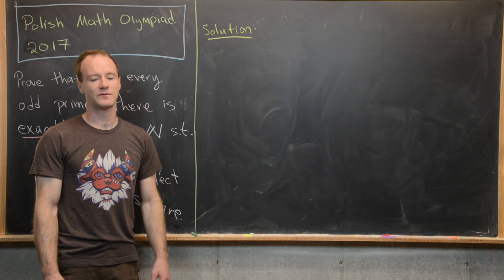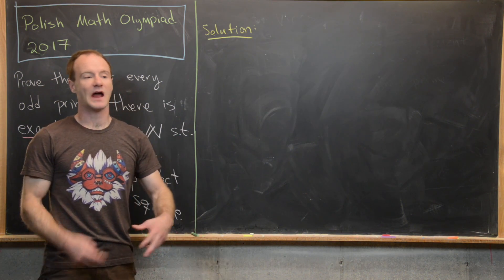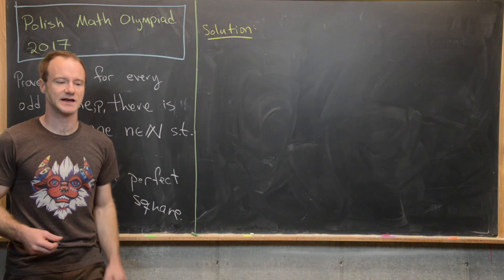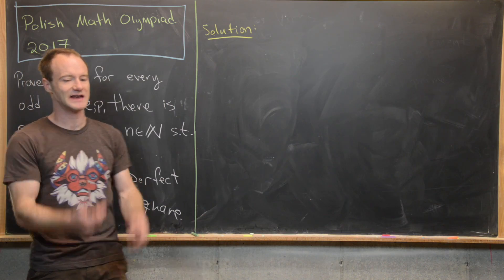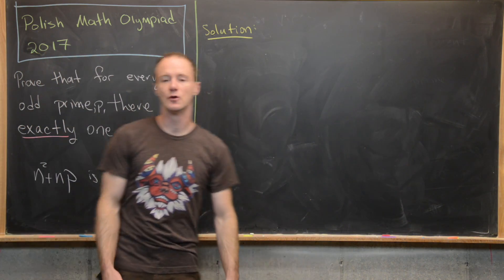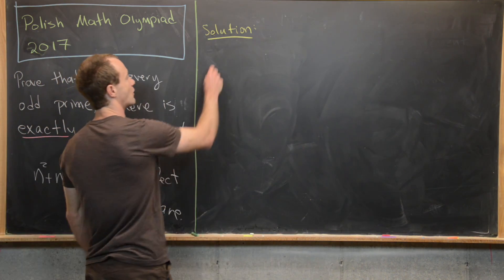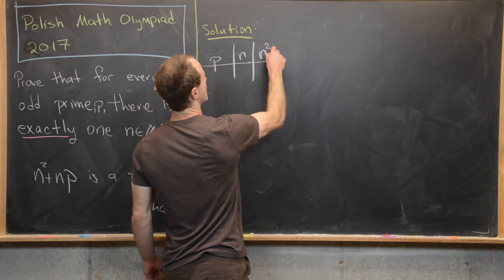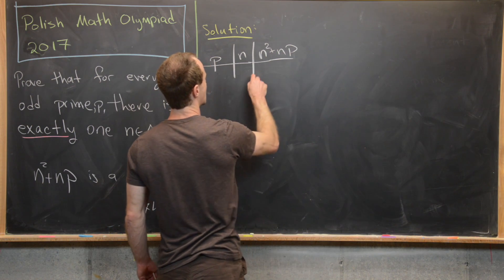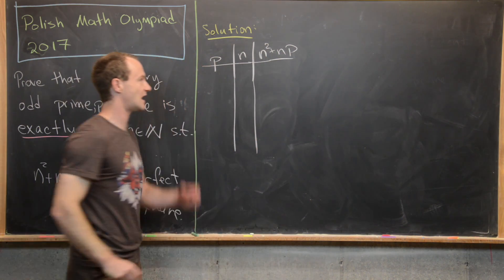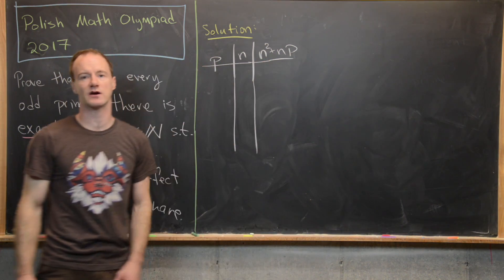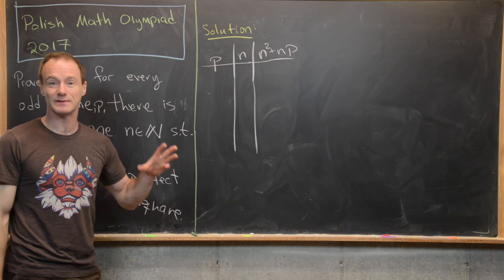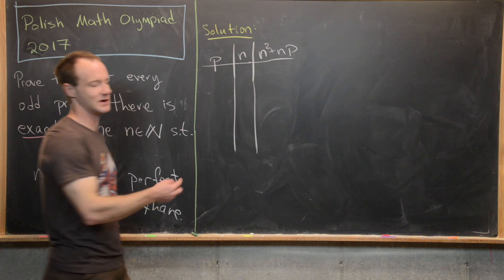Hopefully those hints were helpful. Now we're going to look at a solution where p is any odd number and maybe try to simplify that down to our unique case when p is a prime. I want to start off with a chart with the values p, n, and then n squared plus np, but not all the values—just the values that give us a perfect square in this right-hand column. And like I said before, I'm taking p to be an odd number, not just prime numbers here.